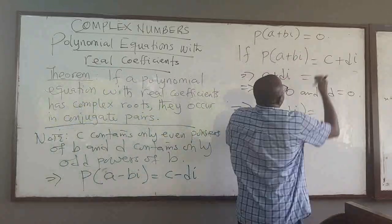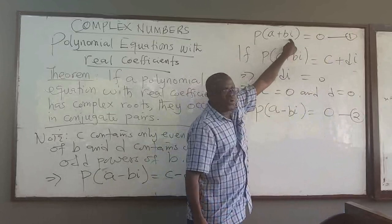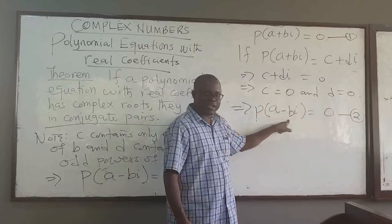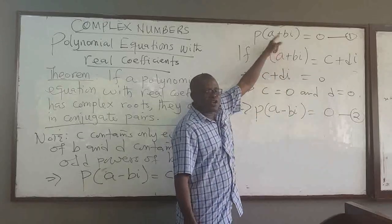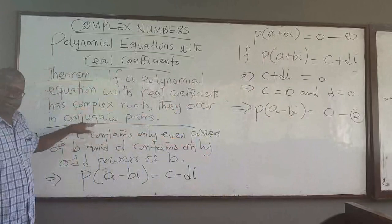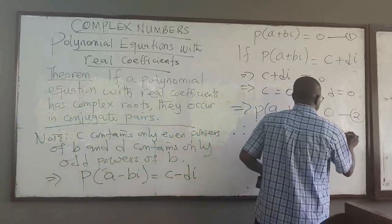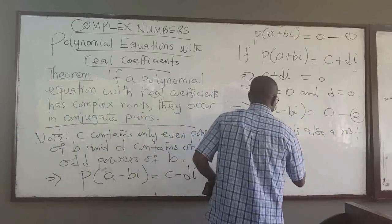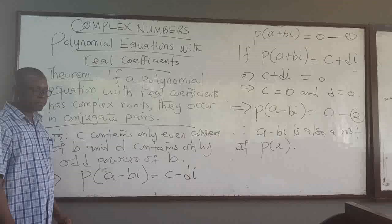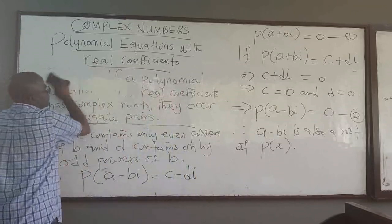Since p(a minus bi) equals zero, this means a minus bi is also a root of the polynomial. Therefore, a minus bi is also a root — which is the conjugate of a plus bi. That is the proof of the theorem: roots occur in conjugate pairs. Now let's use this theorem to do a simple example to illustrate it.